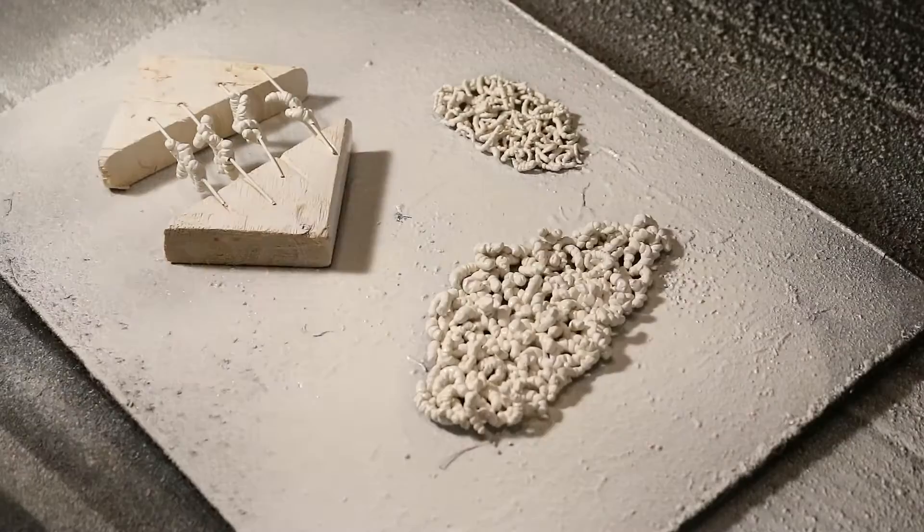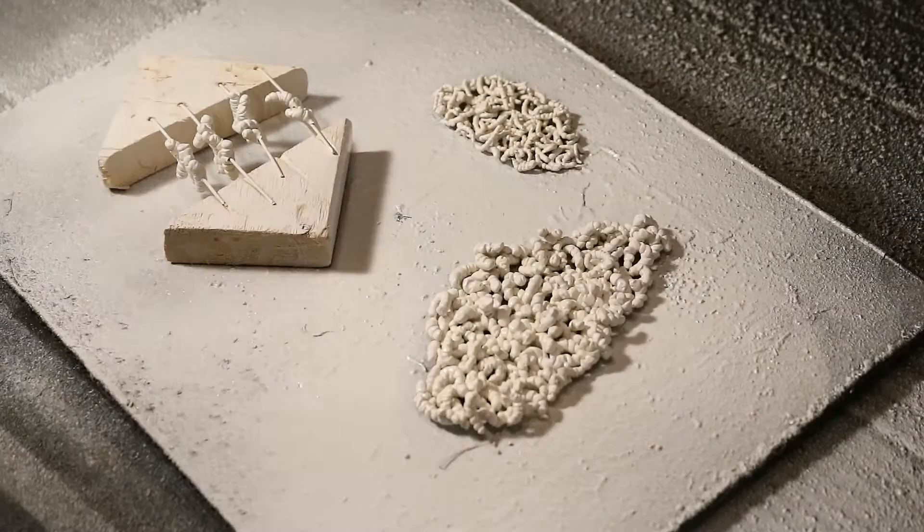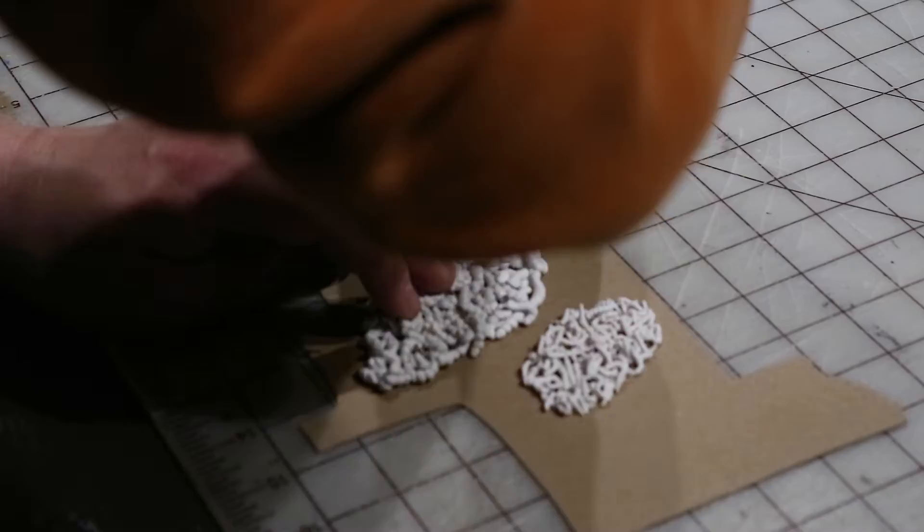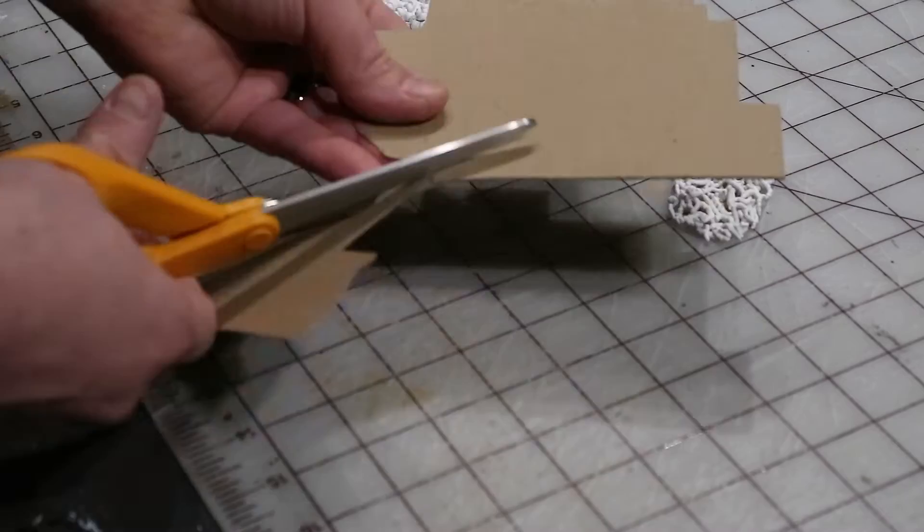Once they're all baked and hard now we're going to give them a coat of white spray paint just so that paint will adhere. Paint doesn't adhere very well to just the base Sculpey so I like doing a little bit of spray paint first.